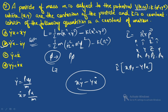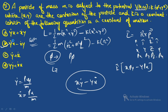Question eight: the six faces of a cube are painted blue, violet, green, yellow, red, and orange. If the cube is rolled four times, what is the probability that the green face appears exactly three times?